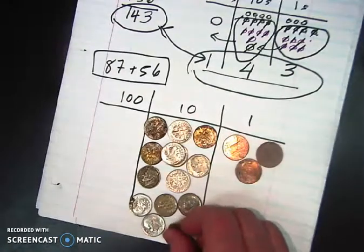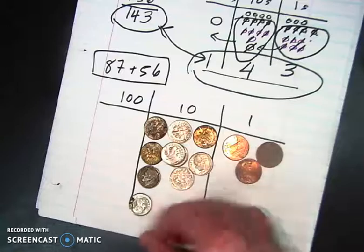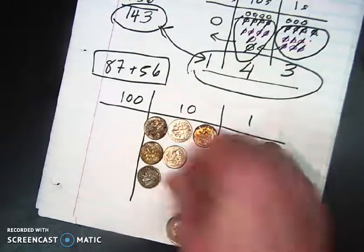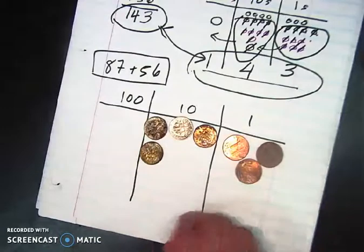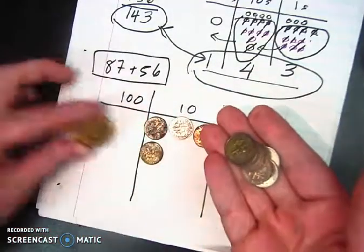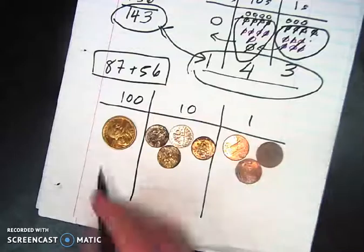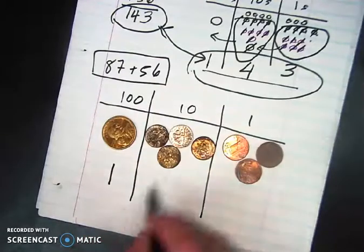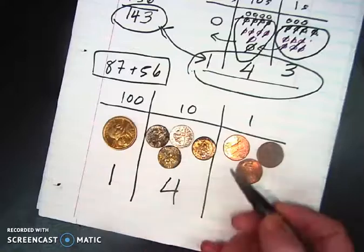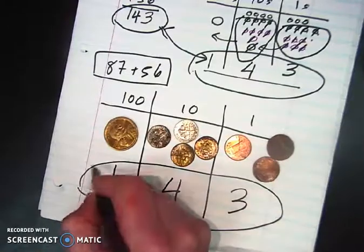Now I'm going to do the same thing with the dimes because 10 dimes makes a dollar. So 1, 2, 3, 4, 5, 6, 7, 8, 9, 10. So here I've got my 10 dimes and I'm going to trade them in for a shiny dollar coin. So I'm going to put my dollar coin there. So what we see now, it's the same problem. We've got our $1, we've got our 40 tens, which is 40 and then 3 cents. Again, giving us 143 or as we know it, $1.43.